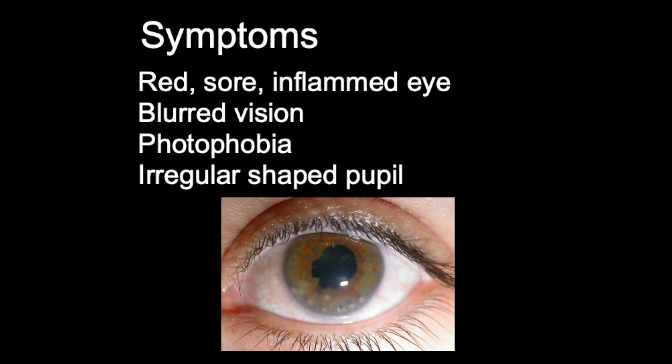In terms of symptoms, the patient is likely to present with a red, sore, and inflamed eye. They're also going to complain of blurred vision and may describe photophobia, which is sensitivity to light. In exam questions, an irregular-shaped pupil is a common lead-in — for example, the question might describe a patient presenting with an oval pupil with ciliary flush, as shown in this example here.